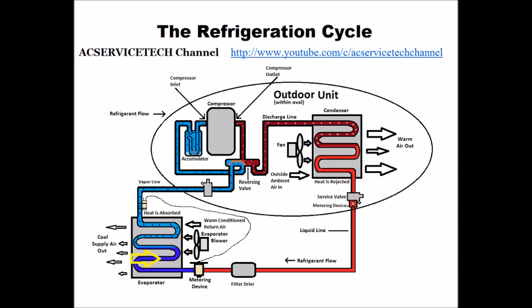It then starts to absorb heat from the house, continuing to absorb heat until it turns into a saturated state where liquid and vapor both exist. That's where it's able to store most of the heat it's absorbing from the house during that phase change from liquid to vapor. It then turns into a complete vapor and continues to absorb heat until it comes out of the evaporator coil — the indoor coil in cooling mode. The temperature increase in vapor form from where it exits the saturated state to where it exits the evaporator coil is called the superheat.